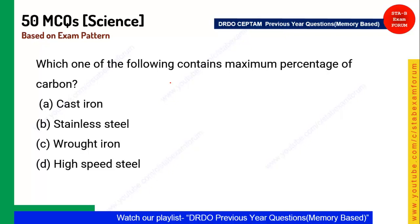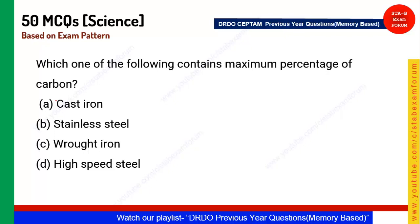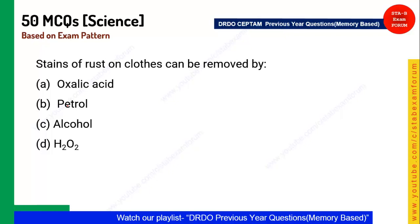Next question: Which of the following contains the maximum percentage of carbon? Steel and iron all contain iron-carbon content, but cast iron has the maximum carbon content. Cast iron is the correct answer.